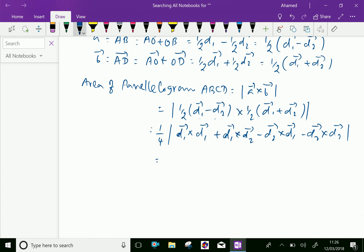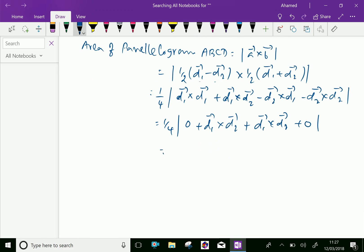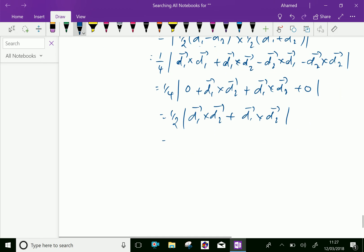Here is equal 1 by 4 modulus. Here D1 cross D1 is 0 because same vector cross multiplication is 0, plus D1 cross D2 minus, we can change it here, D2 cross D1 vector is minus of D1 cross D2. Already minus is there so plus change plus D1 vector cross D2 vector and vector D2 into vector D2 is another 0.